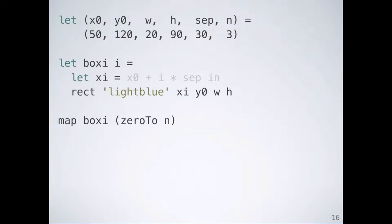The x position is calculated from the index by adding the initial x position, x0, to i times the separation. As expected, when this program is run, it produces three evenly spaced boxes.